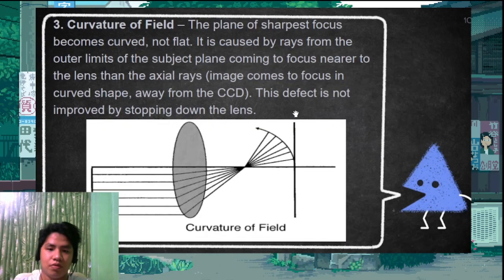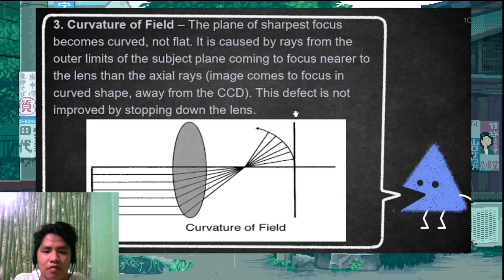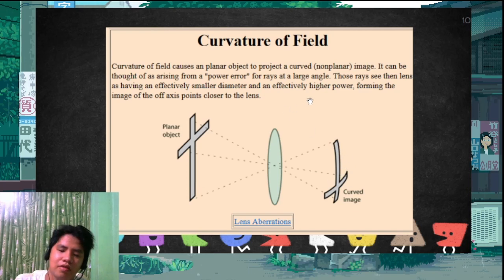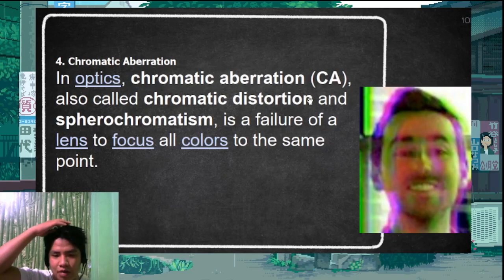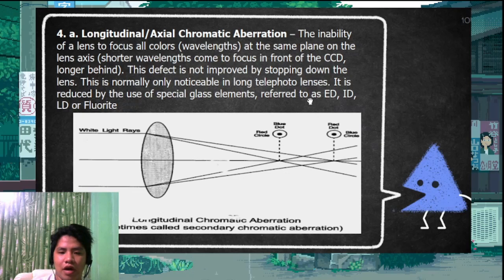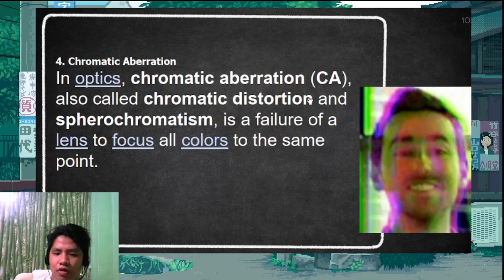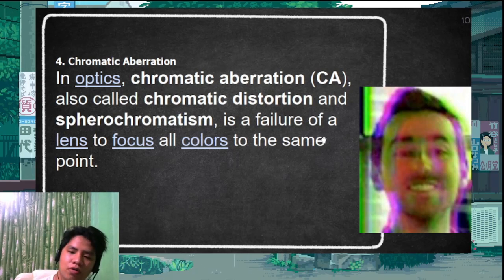Curvature of field: rays from the outer limits of the subject plane come to focus nearer to the lens than the central rays, creating a curve in the field. So when a planar object is captured, the sides curve. Chromatic aberration, also called chromatic distortion or spherochromatism, is the failure of the lens to focus all colors at the same point — resulting in color fringing visible as violet or color separation.